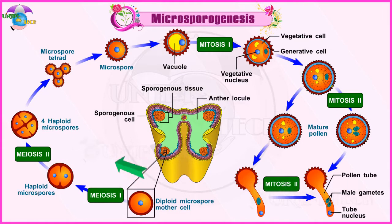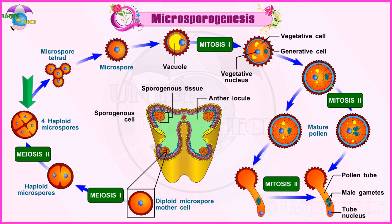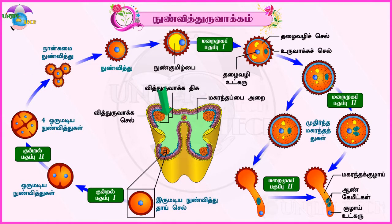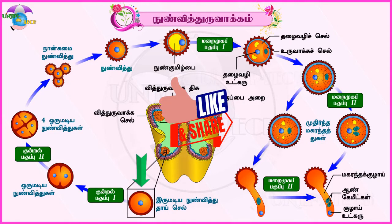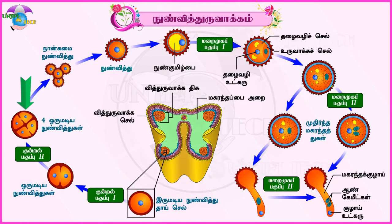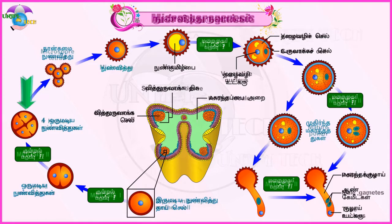Each microspore mother cell divides meiotically to form a tetrad of four haploid microspores. (Tamil: The last sporogenous cells function as mother cells; each mother cell divides to form four haploid microspores.)